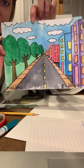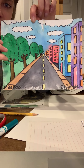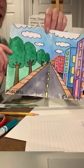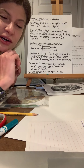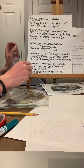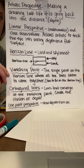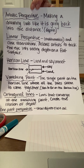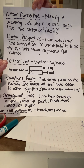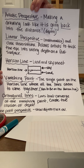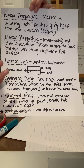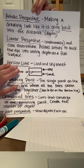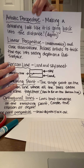That is one-point linear perspective — where we're tricking our eye to make the image appear smaller as it gets to the background. I'm going to go over some definitions. Artistic perspective is making a drawing look like it's going back into the distance, to create depth. Linear perspective actually uses mathematics — it involves measuring and making the right calculations so that your drawing turns out with the correct perspective. It involves close observation and allows artists to trick the eye into seeing depth on a flat surface.